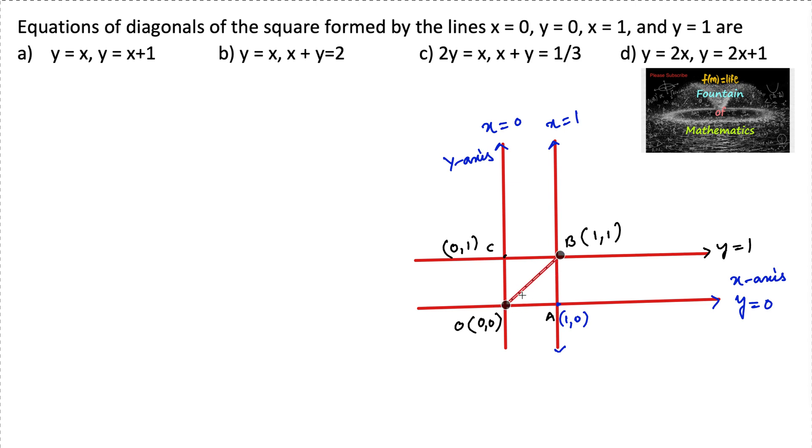OB is a diagonal which is passing through the point 0, 0 and 1, 1. So we can say here it's 1, 1 and 0, 0. Any line passing through origin is y is equal to mx and it is passing through 1, 1 which implies that 1 is equal to m into 1. So m is equal to 1.